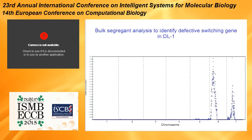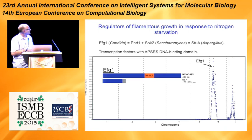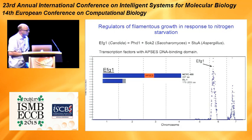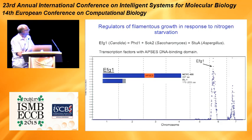The switching defect inheritance was Mendelian — one-to-one inheritance of switching versus non-switching phenotype. The bulk segregant analysis gave two peaks across seven chromosomes. The strongest signal came from a gene called EFG1. The DL1 genome has a frameshift in this EFG1 gene — EFG1 is a transcription factor with a DNA binding domain called an APSES domain. The frameshift truncates the protein and removes the DNA binding domain.